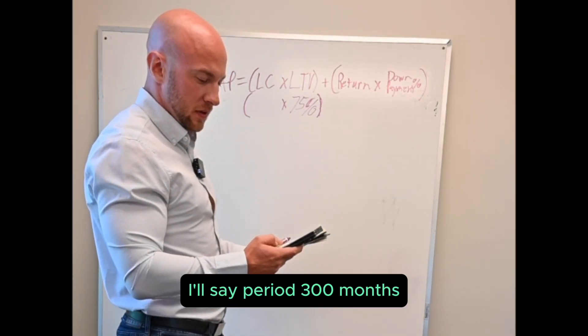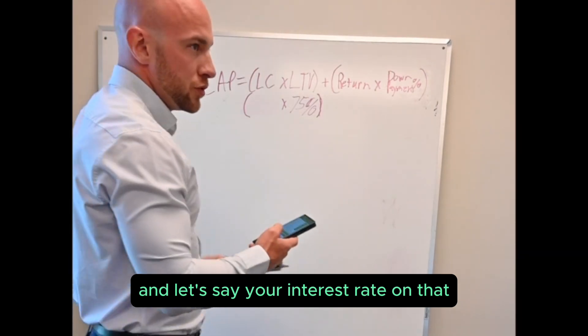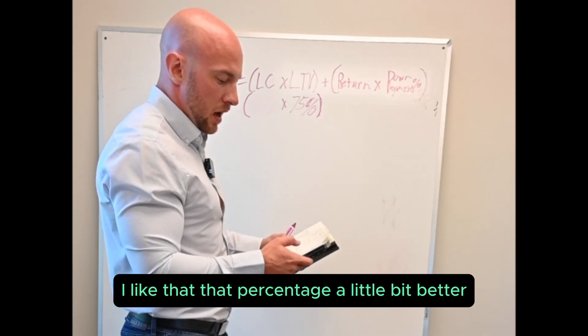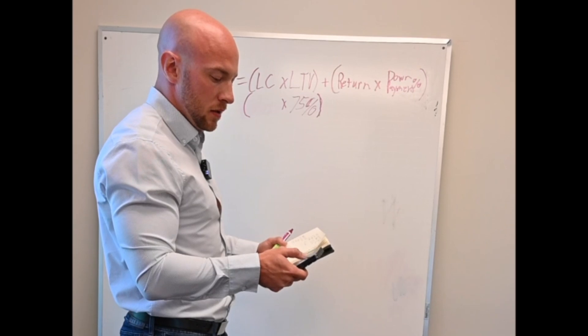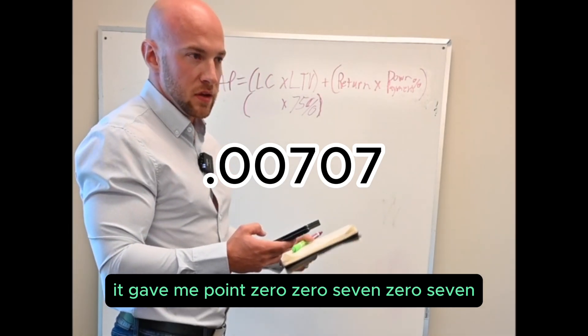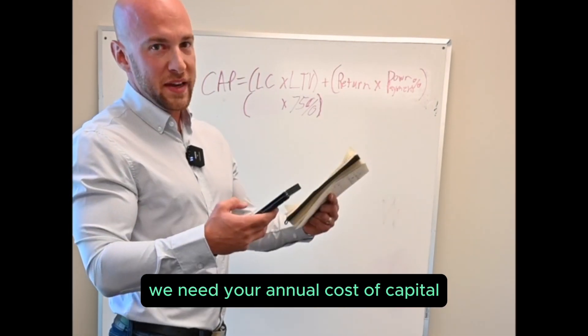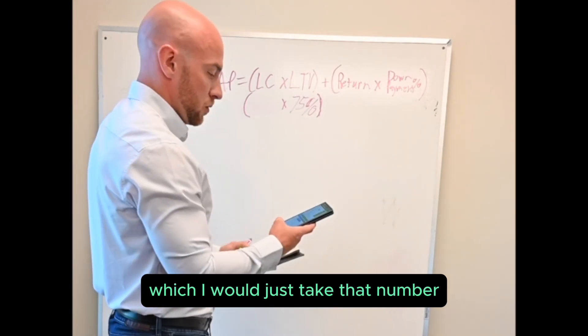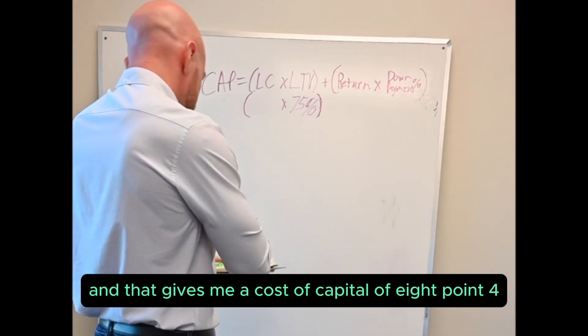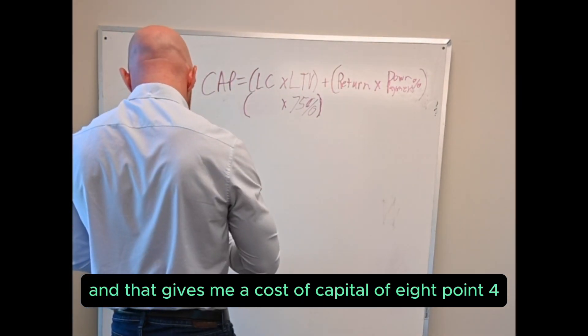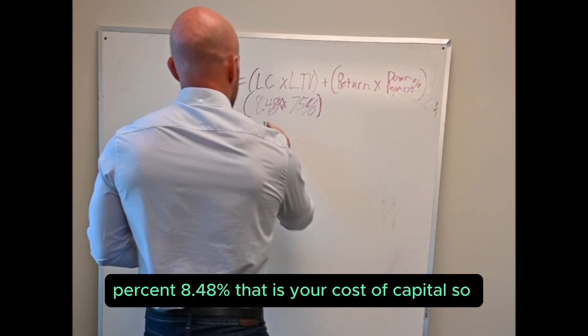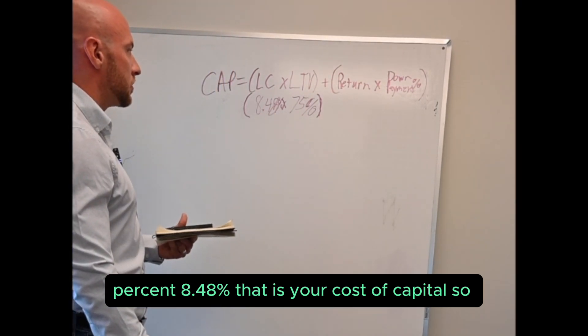I'll say period 300 months and let's say your interest rate on that, let's use seven percent, I like that percentage. On present value of one, that gave me an interesting number, it gave me 0.00707. That is your monthly cost of capital. We need your annual cost of capital which I would just take that number and times it by 12, and that gives me a cost of capital of 8.48 percent. That is your cost of capital.